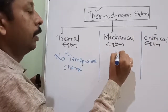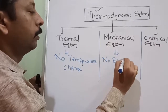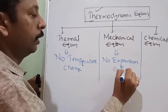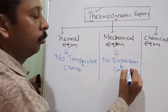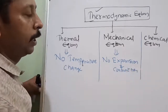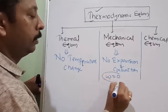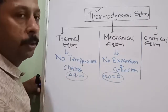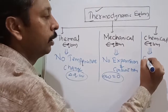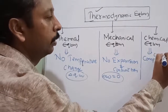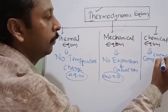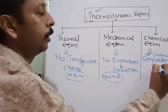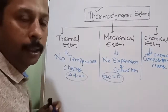For mechanical equilibrium: there is no expansion or contraction — when you are maintaining a movable container without any piston movement, work done will be zero, delta W equals zero. For chemical equilibrium: when there is no chemical composition change, it is called chemical equilibrium. When thermal equilibrium, mechanical equilibrium, and chemical equilibrium all coexist, it is thermodynamic equilibrium.